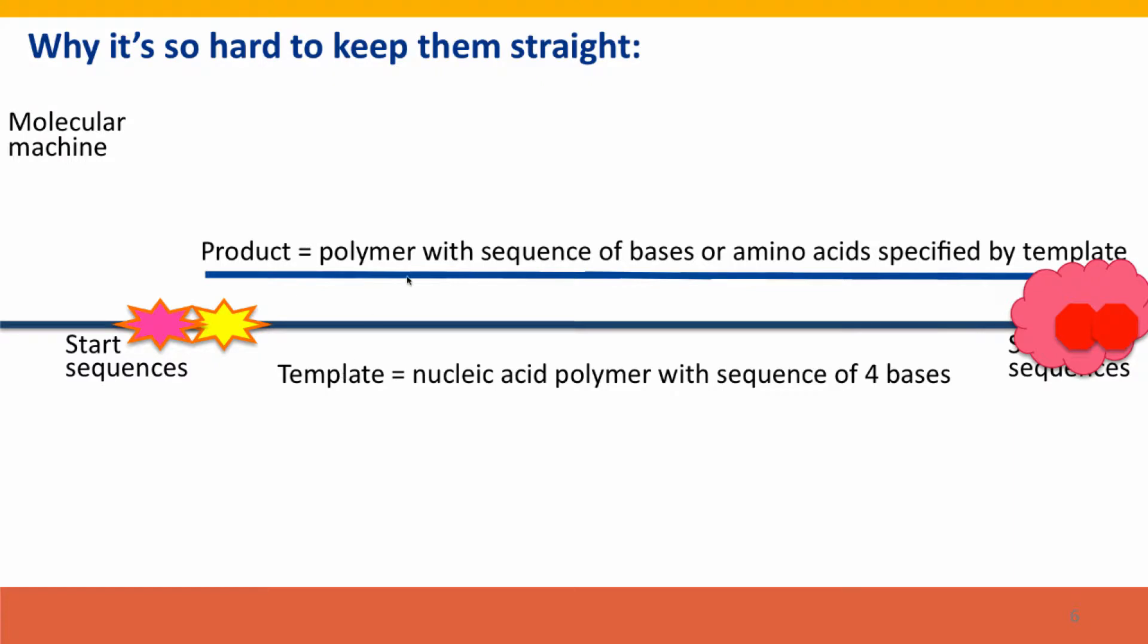So the product, if this is DNA replication, the product is DNA. If it's transcription, the product is RNA. If it's translation, the product is a protein. But in each case, it's a polymer and its sequence was determined by the sequence of the template. The molecular machine that carries out this process, when it reaches the stop signals, it disassociates and releases the completed product. So that's why it's really hard to keep them straight, because fundamentally they are very similar processes, but they have very different significances, very different roles in the cell.